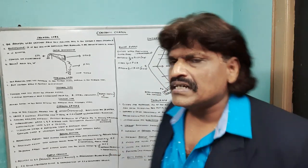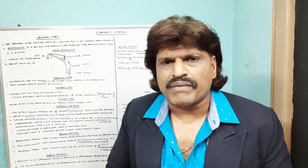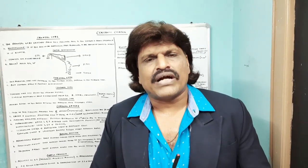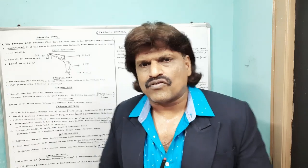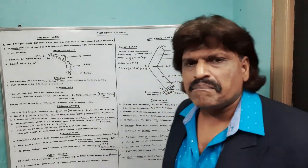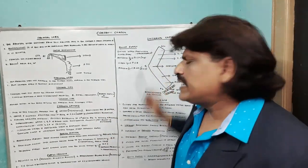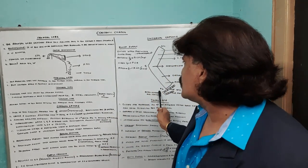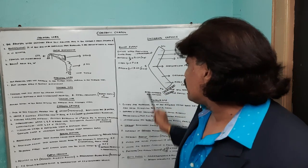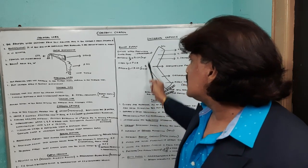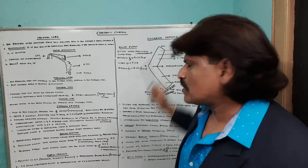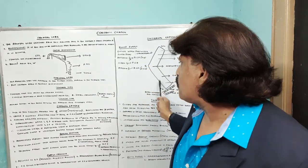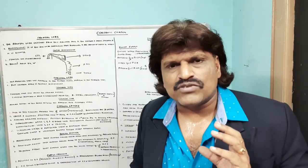Now we come to the internal capsule — perhaps the most important topic for undergraduate and postgraduate students of internal medicine. The internal capsule has three parts: the anterior limb, the genu, and the posterior limb. We have the thalamus, caudate nucleus, and lentiform nucleus surrounding it.